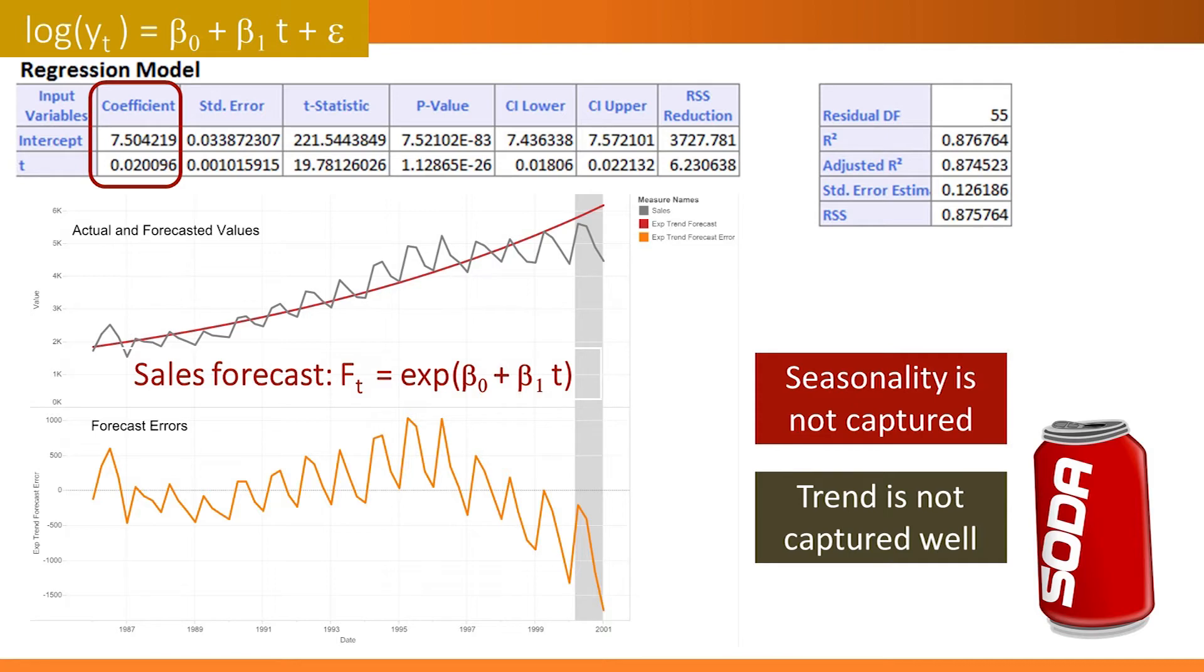This is the problem with fitting a global trend, where we apply the same trend shape throughout the entire period. What are some possible solutions? One solution is to fit a separate model before 1997 and one after 1997. The other option is to decide that the earlier period is irrelevant and use only data from 1997 onwards.